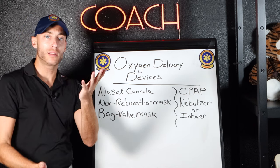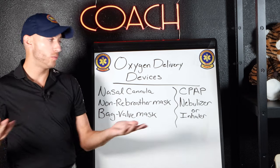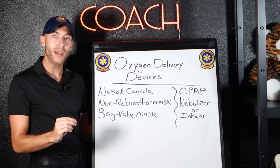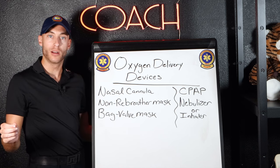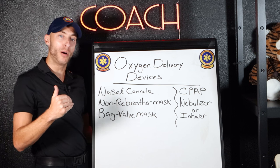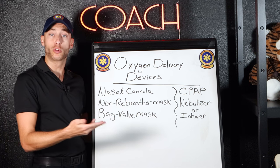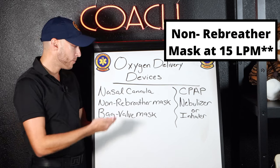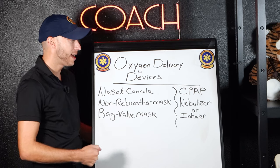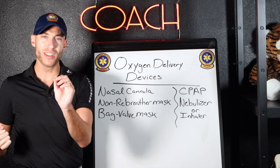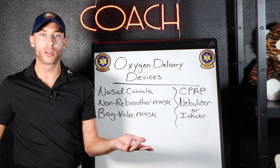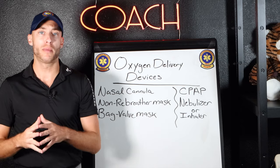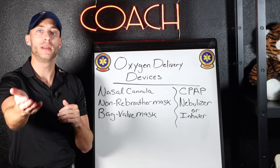What levels of oxygen delivery do we use for these? Nasal cannula is one to six liters per minute. We're trying to get them above 94% — maybe we start at two, does it work? Try four. Try six. If that doesn't work, we move up. BVM, you're at 15 liters per minute. The nebulizer, depending on where you are, could be six liters per minute or eight liters per minute.